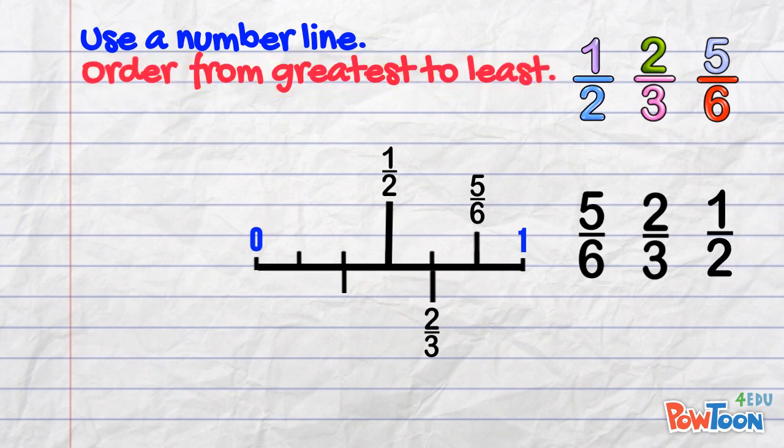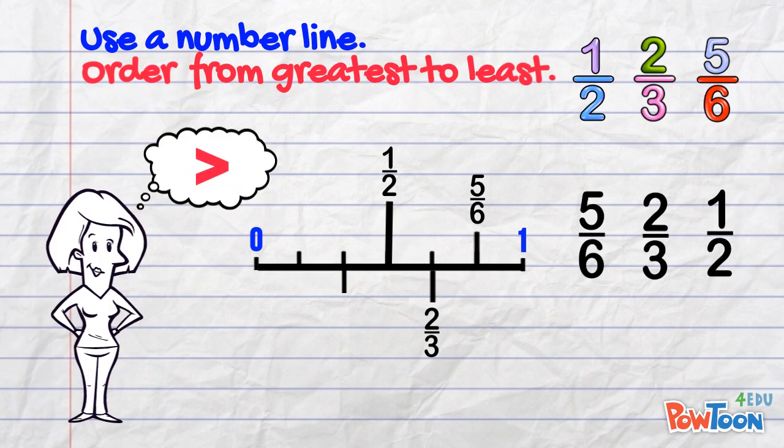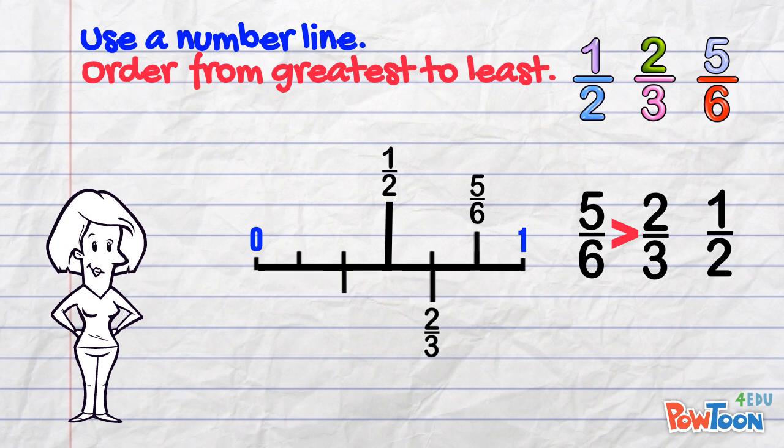Then 1 half. Finally, we use the greater than sign to show our understanding. 5 sixths is greater than 2 thirds which is greater than 1 half.